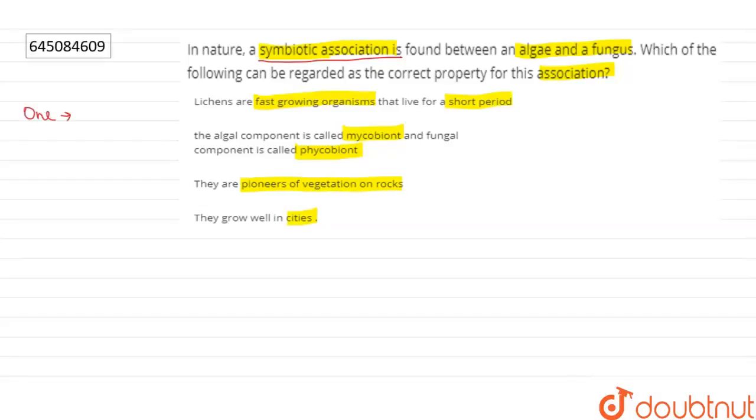And the other species may have positive, negative, or neutral effect. But in the case of algal and fungal relationship, both species get the benefit. Algae prepare food for the fungus and fungus provides shelter to the algae.